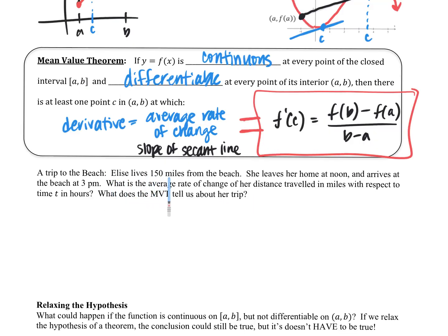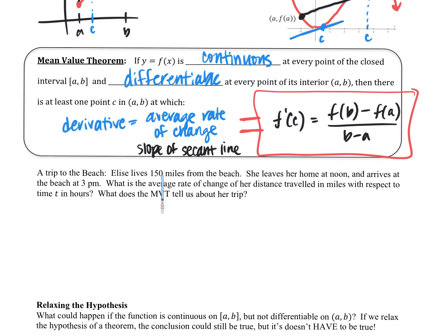Elise, you live 150 miles from the beach. You leave your house at noon and arrive at the beach at three. What is the average rate of change over distance traveled in miles per hour with respect to time? If she got there in three hours, how fast was she typically going? What was her average rate? 50 miles an hour.